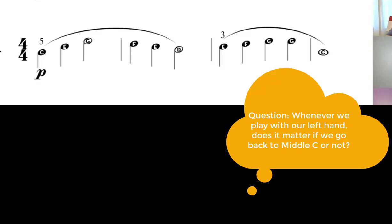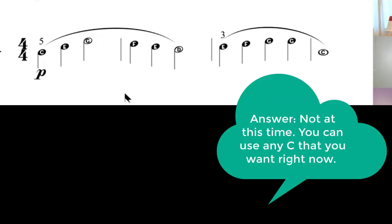Whenever we play with our left hand, does it matter if we go back to middle C or not? Good question. Not now it doesn't. It doesn't matter now. Later on, when you get on the staff, and it's a C, it's a particular C. It's not any C. But right now, this is just trying to orient you to the keyboard.